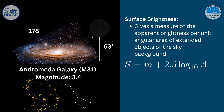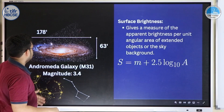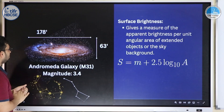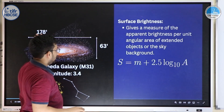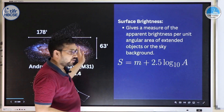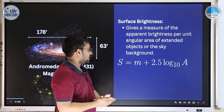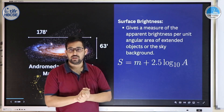For extended objects, we define surface brightness: the magnitude per unit angular area. It is a common mistake to simply divide the magnitude by the angular size. The correct formula is: surface brightness = magnitude of the object + 2.5 × log₁₀(A), where A is the angular size in arcseconds squared. For Andromeda, the dimensions are roughly 178 arcminutes × 63 arcminutes; convert to arcseconds and use this formula to calculate surface brightness.